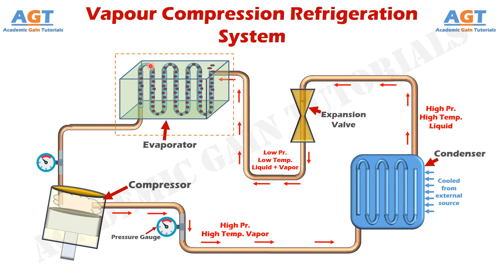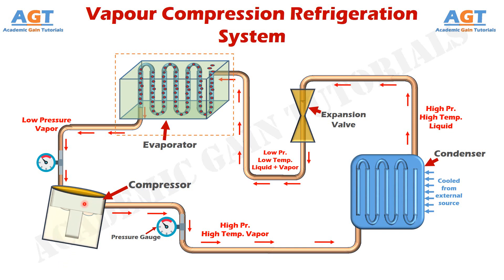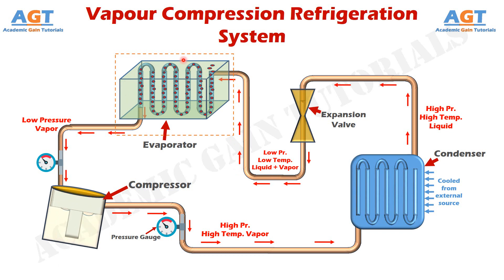After that, this low pressure vapor refrigerant leaves the evaporator and enters the compressor through the connected pipe. This low pressure vapor refrigerant is again compressed inside the compressor chamber and converted to high pressure, high temperature vapor. Then it is passed to the condenser where it changes phase and is converted to liquid, then to the expansion valve, then the evaporator, and again to the compressor — so the cycle keeps repeating over and over again, and refrigeration or cooling is obtained continuously in the evaporator region. This is how the vapor compression refrigeration system works.